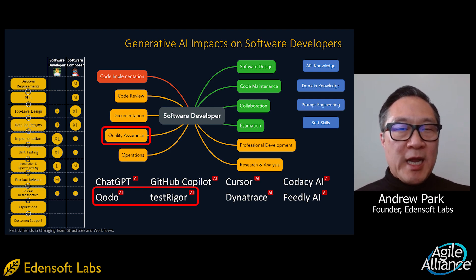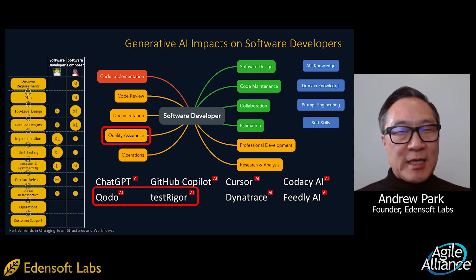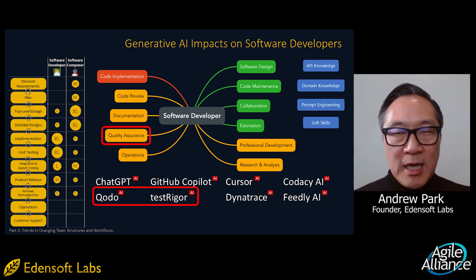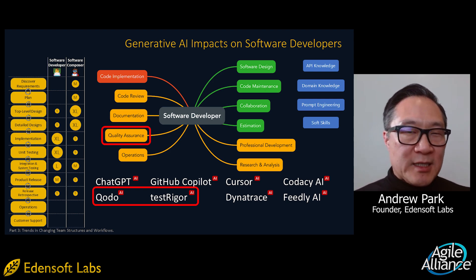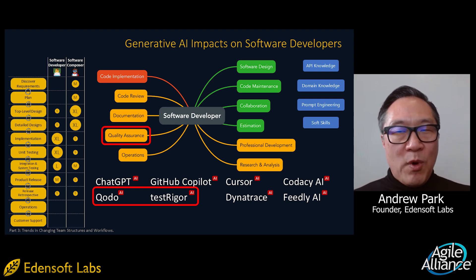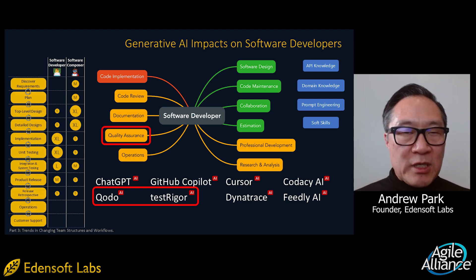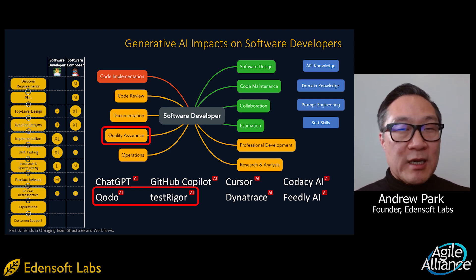For GUI testing, a tool called TestRigor uses generative AI to create end-to-end tests. It observes your application behavior and user interactions, then generates test scripts based on those observations. It allows users to define test scenarios in plain English, making it accessible to non-technical testers. While it simplifies test creation and produces maintainable scripts, it may struggle with complex or highly dynamic UIs, so expect human validation and iteration.